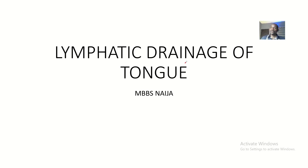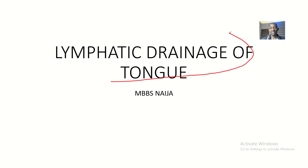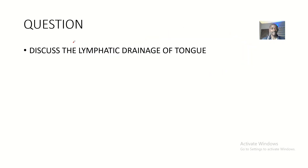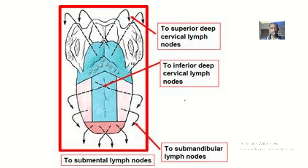Having spoken about the anatomy of the tongue — intrinsic muscles, extrinsic muscles, and arterial supply — next we'll be talking about the lymphatic drainage of the tongue. The question is: what causes the lymphatic drainage of the tongue?